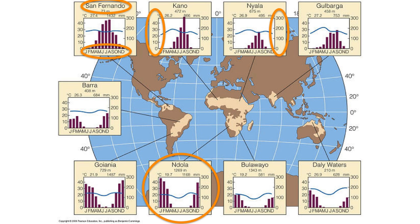For example, on this graph we have Endola, which is in Zimbabwe — a subtropical biome in Africa. You can see from that graph that the average temperature year-round is about 69 degrees Fahrenheit, indicated by the bars. The average rainfall is about 49 inches, shown by the blue line. That represents the average for the year, not the average for the month.